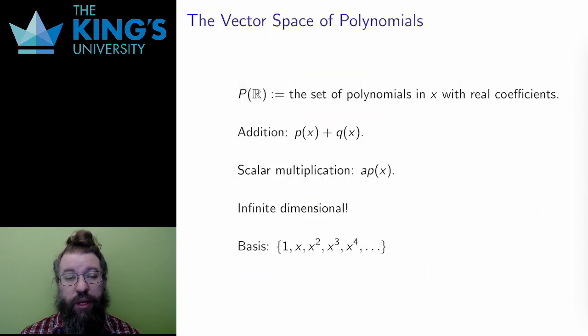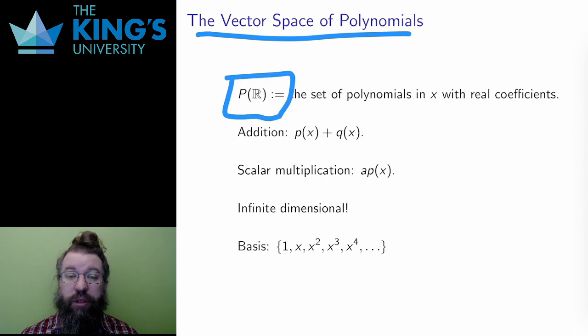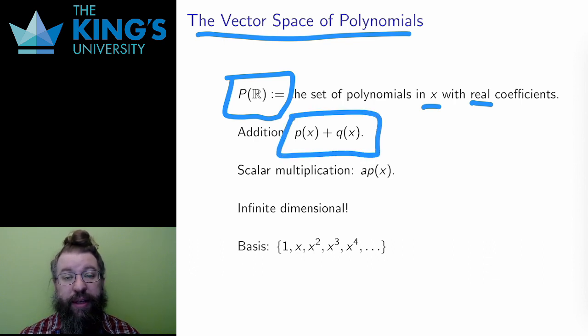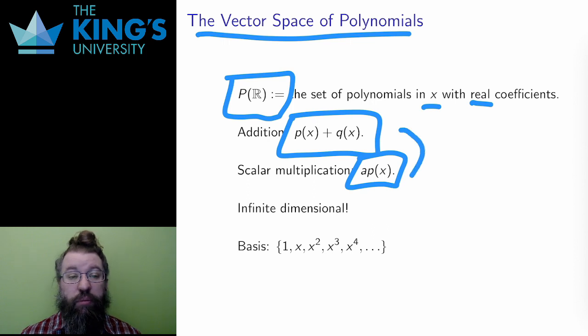The first example is what I'll write here as P(R), the abstract vector space of polynomials in the variable x with real coefficients. An abstract vector space has to have addition, and indeed, I can add polynomials. It has to have scalar multiplication, and I can multiply a polynomial by a scalar, and it is still a polynomial. And the distributive law still works here as well. So this is an abstract vector space.